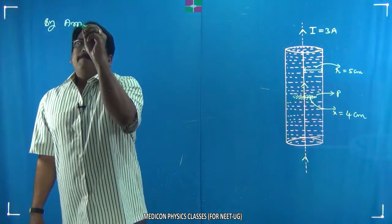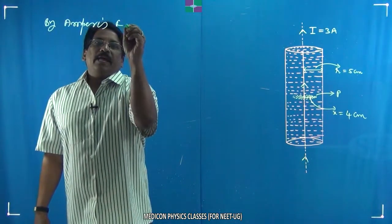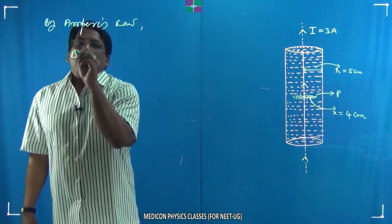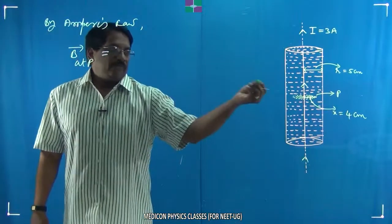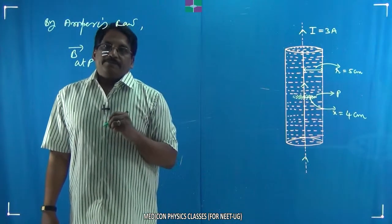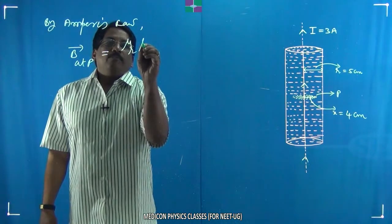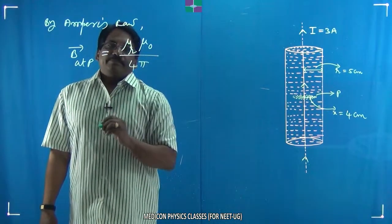Ampere's circuital law, so of course we call simply Ampere's law. B bar, magnetic field induction at point p which is now referred inside the conductor, is equal to μᵣμ₀/(4π). Actually this is μ which is permeability of the medium...